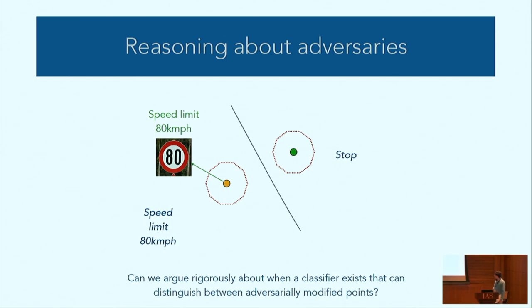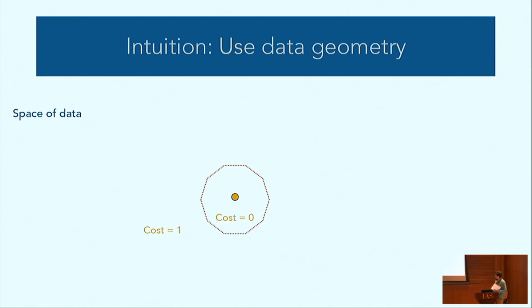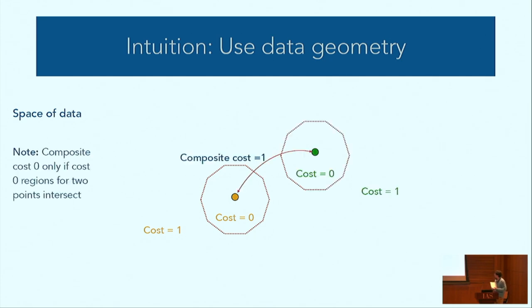We reason about this using the geometry of the data. Here is the space of data with a sample point. We define balls around points, with cost zero inside the ball and cost one outside. The composite cost of going from one point to another is one if you must pass through a cost-one region — the adversary must pay a budget to cross that region. If the cost is one, some classifier can distinguish between the two points. But when balls start intersecting, the composite cost becomes zero — you can travel between points paying zero — and no classifier can distinguish them, since at least one point will be misclassified by any classifier.